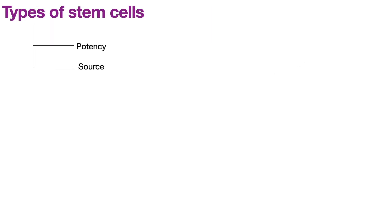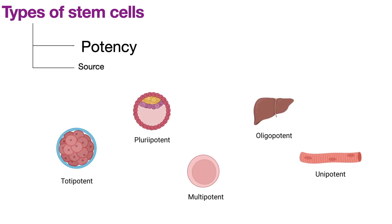Stem cells can be characterized in two ways: by potency and by source. Talking about potency, the first kind is totipotent stem cells — these are derived from one to three day old embryos and can differentiate into any other cell type in the body.